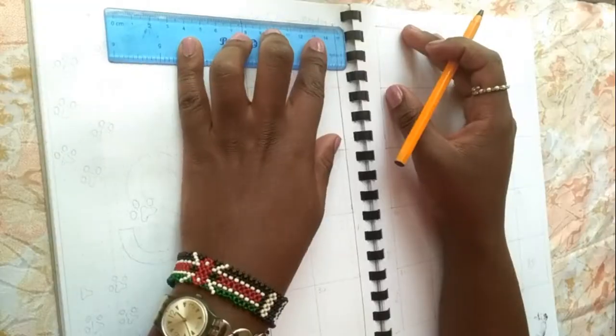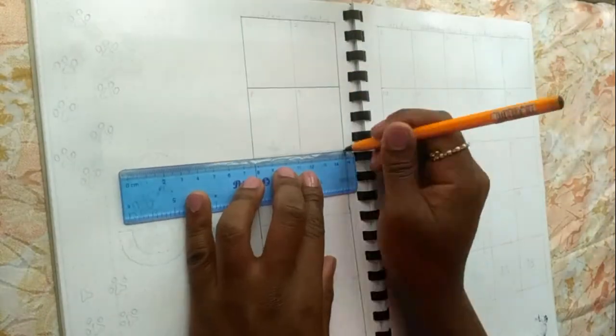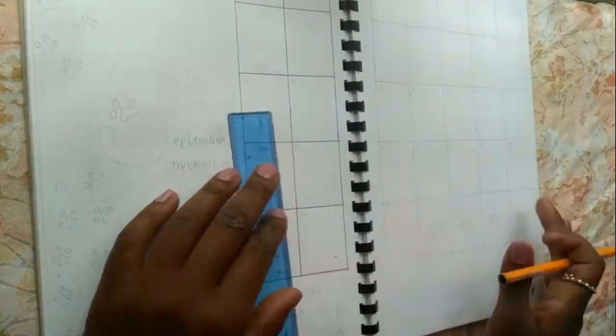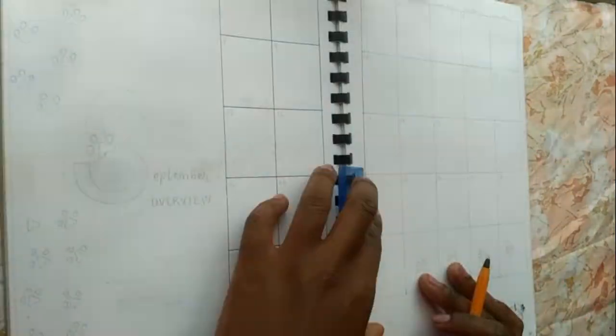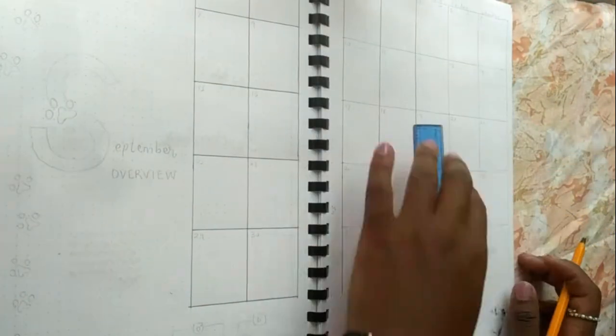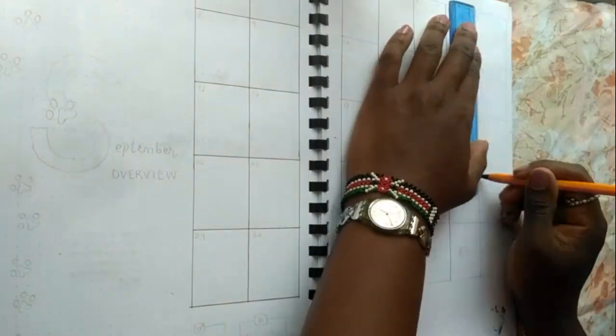I changed up the monthly overview. I have here my usual grid, but I moved the boxes up from the previous month. The boxes here are 9 by 7 dot spaces. I'm using an A4 journal, so that's why they are that big.